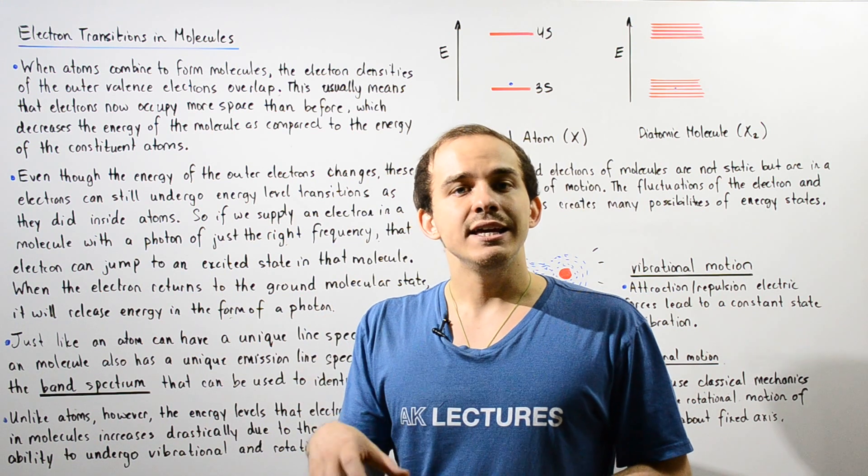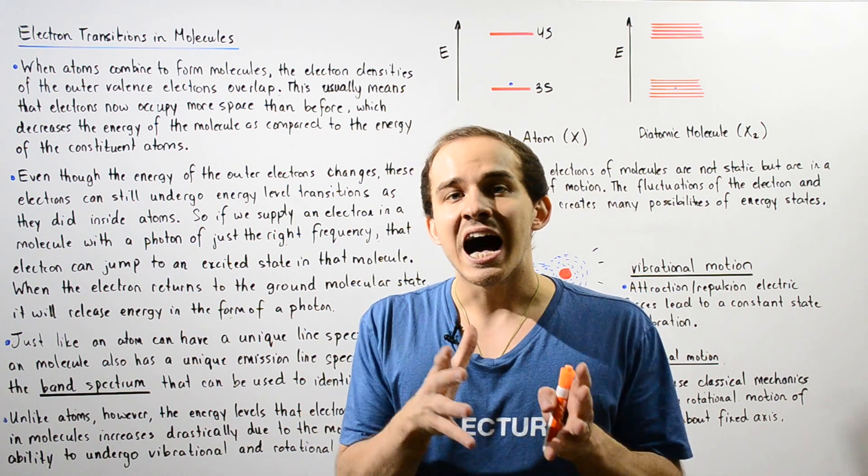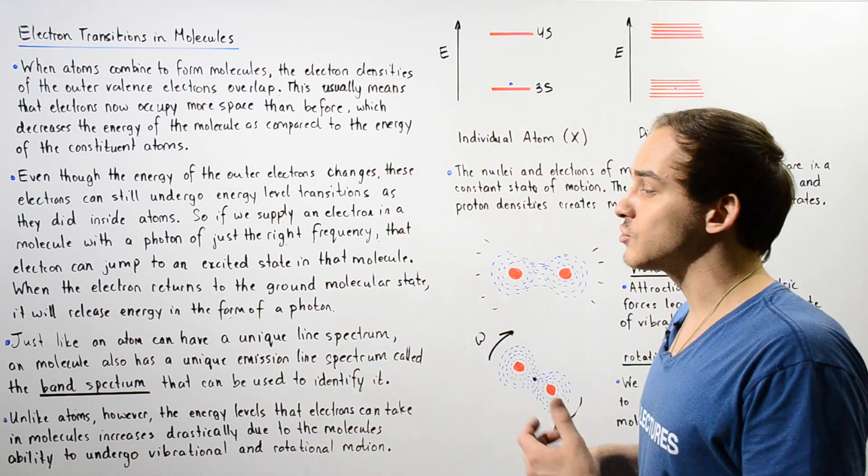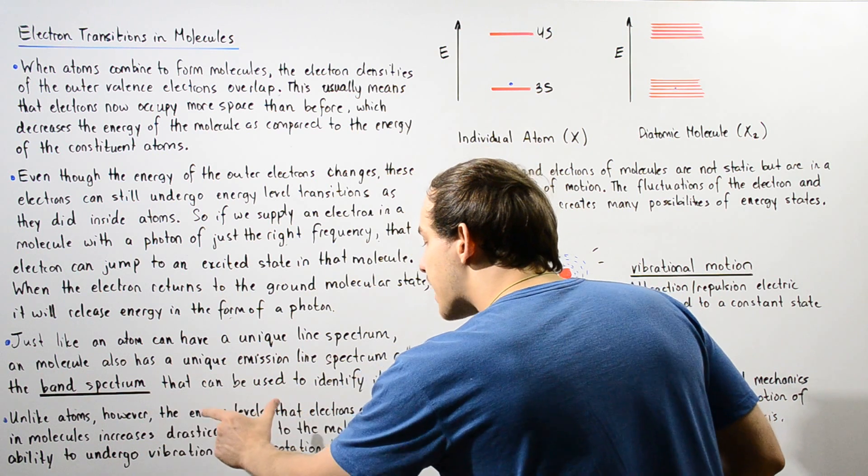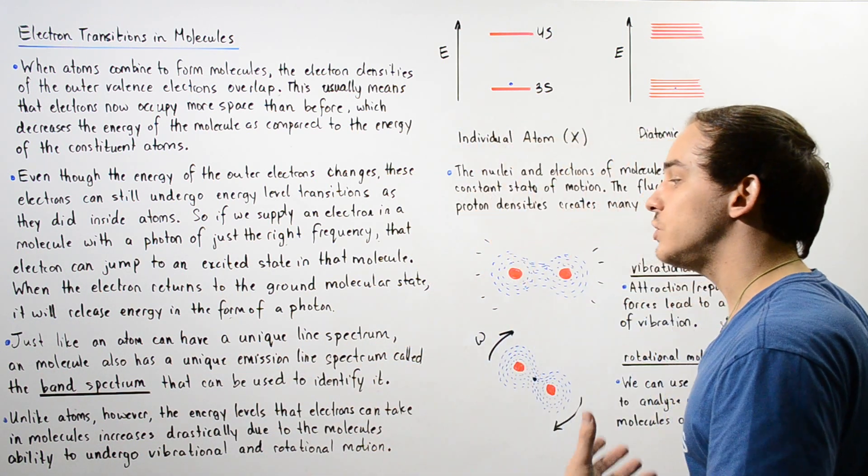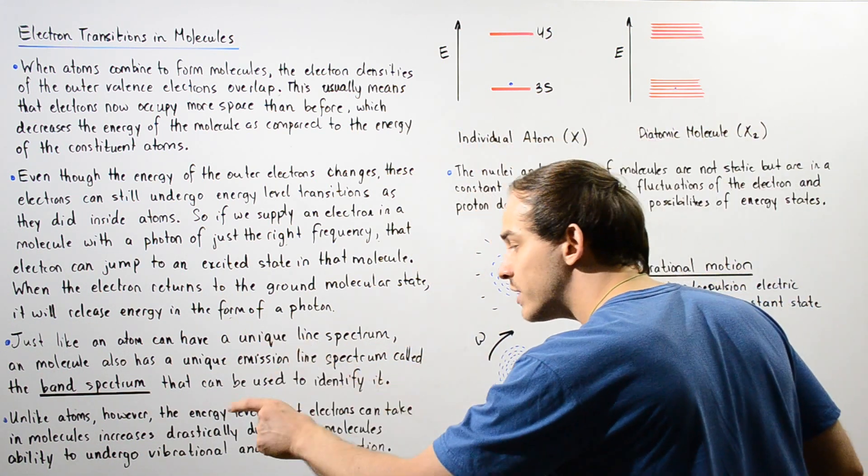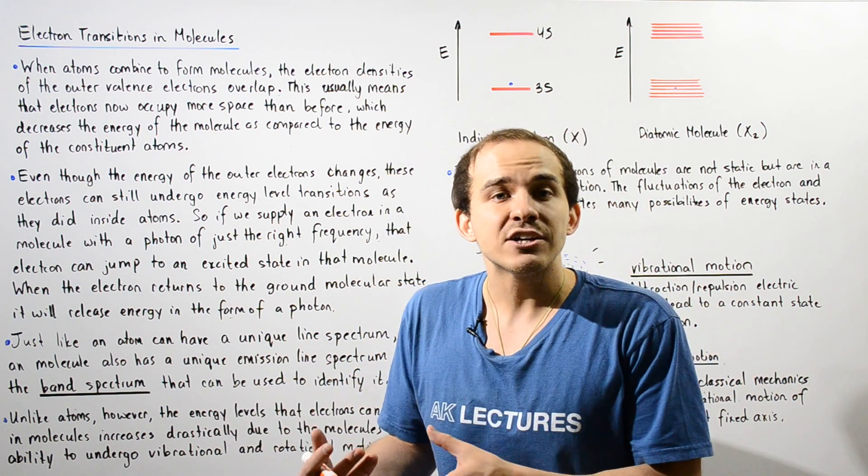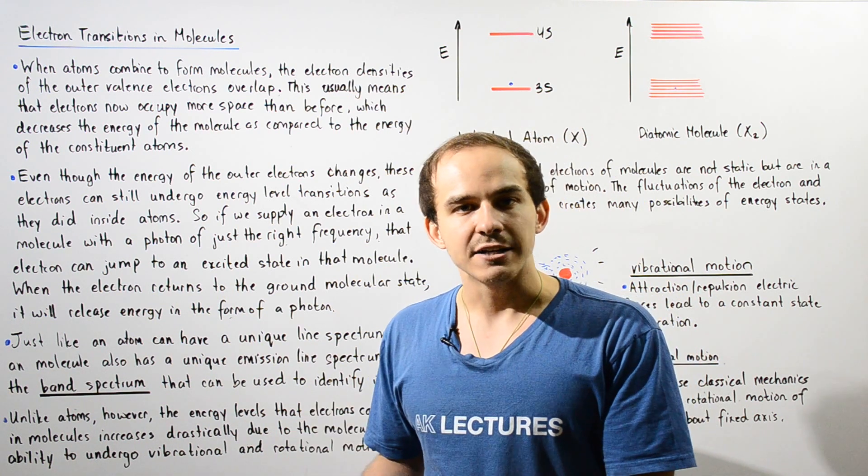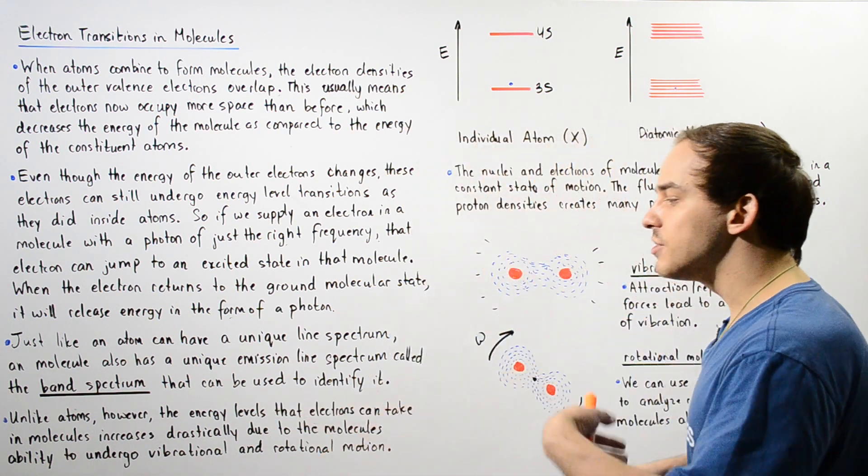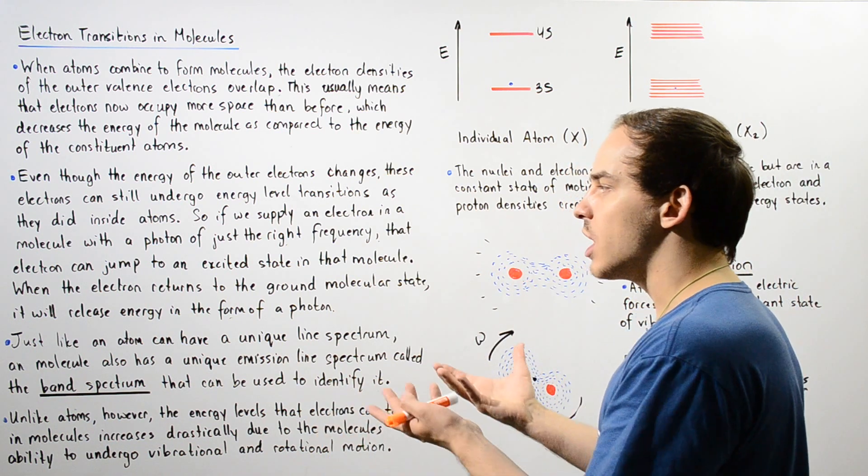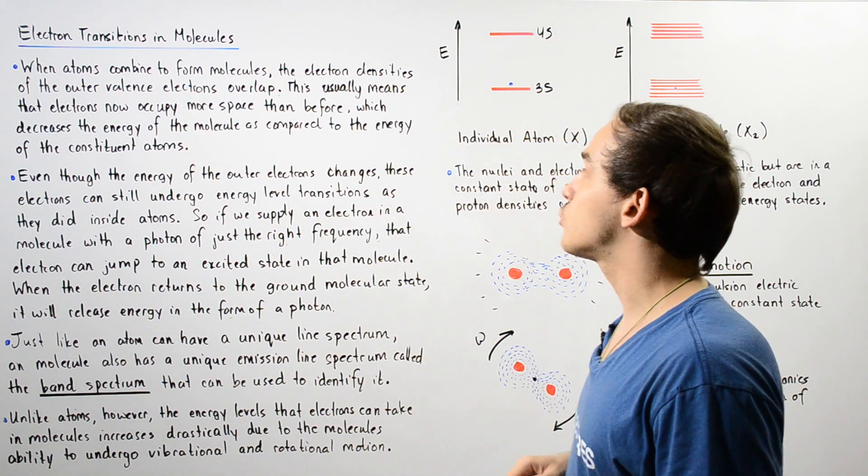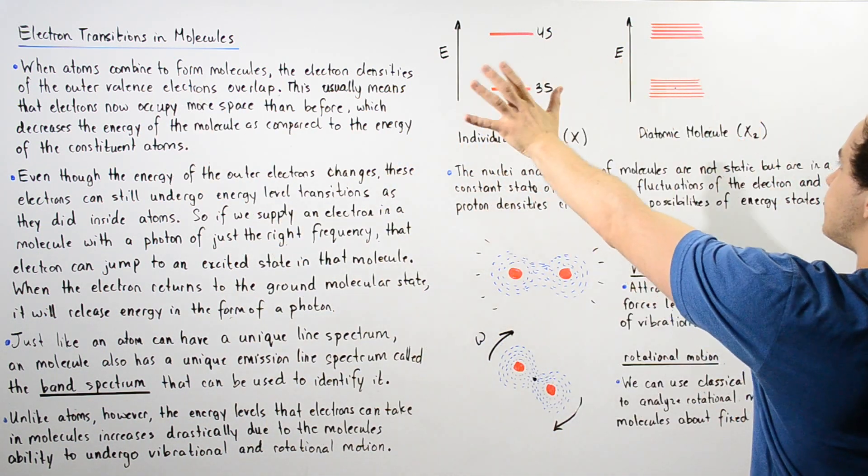Now, what exactly is the difference between atomic transitions and molecular electron transitions? Unlike atoms, the energy levels that electrons can take in molecules increases drastically because molecules can actually vibrate and rotate. To see exactly how vibrational and rotational motion increases the number of electronic transitions, let's compare the following two graphs.